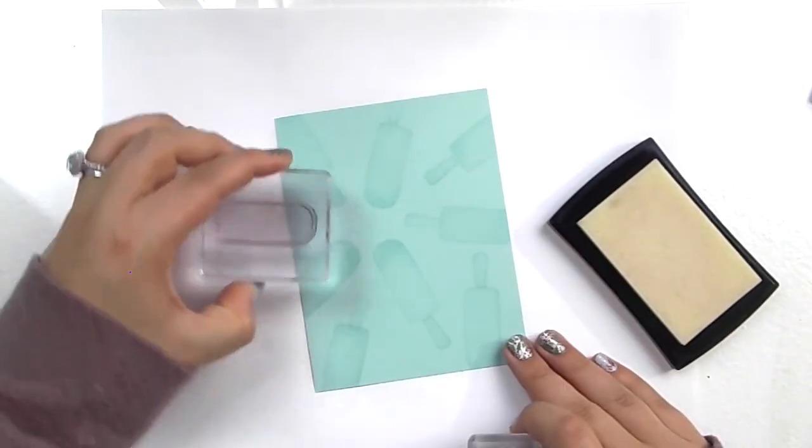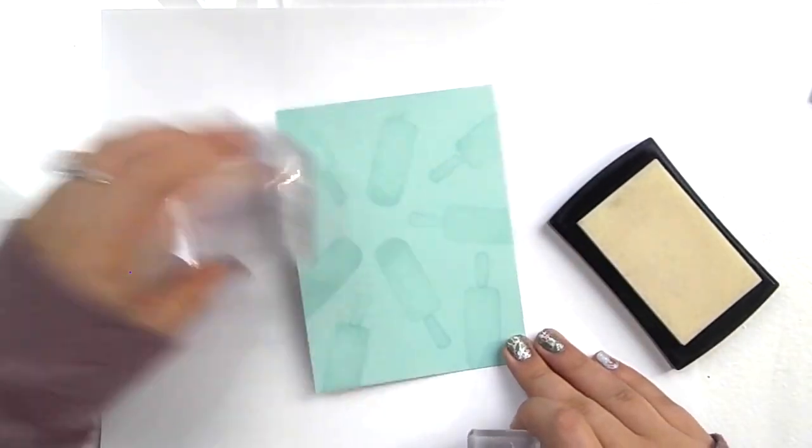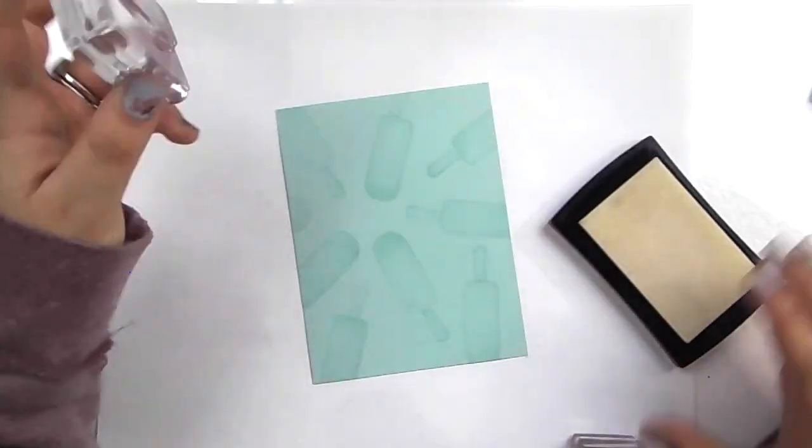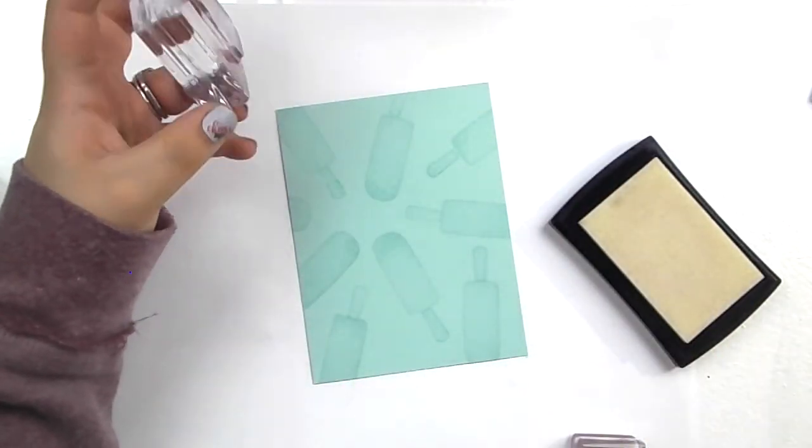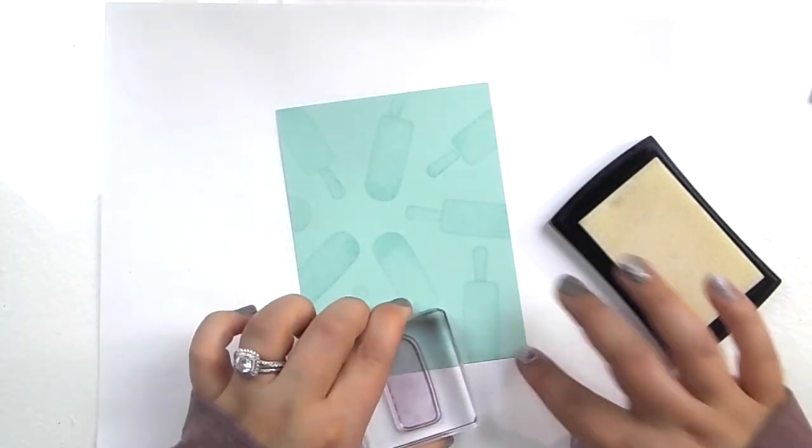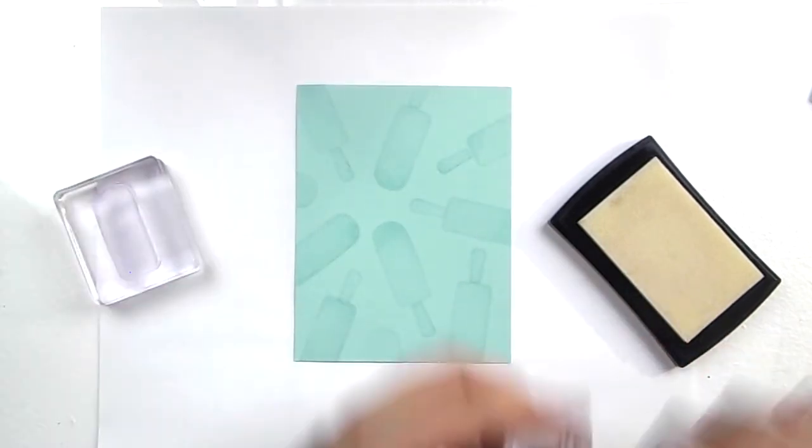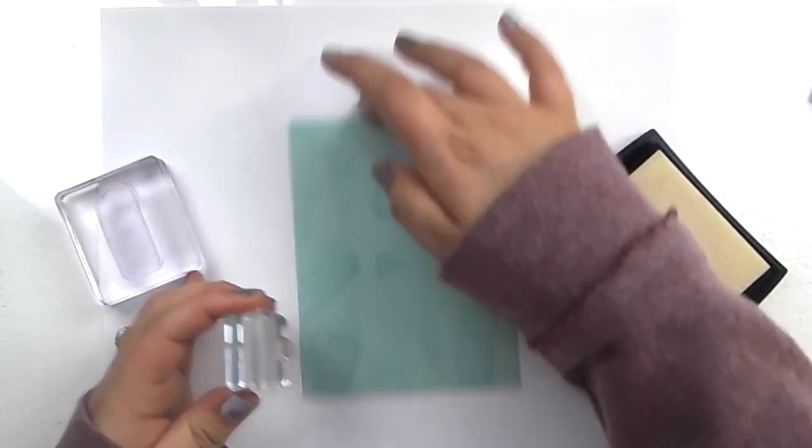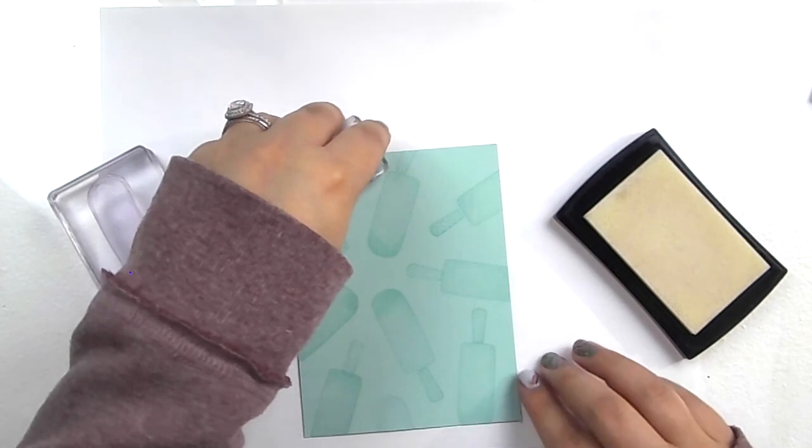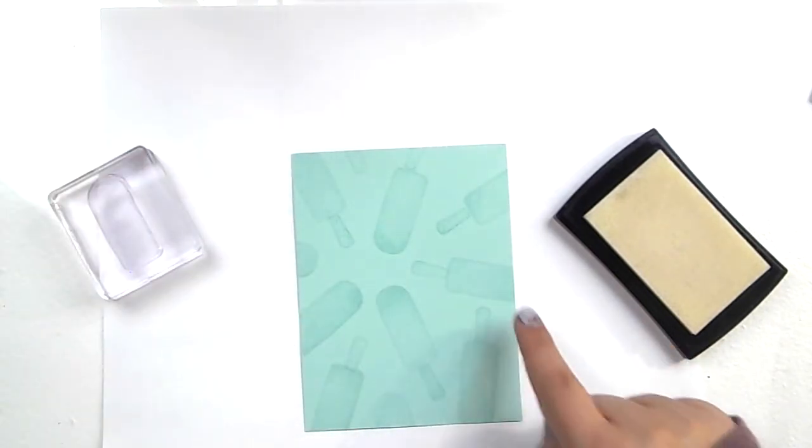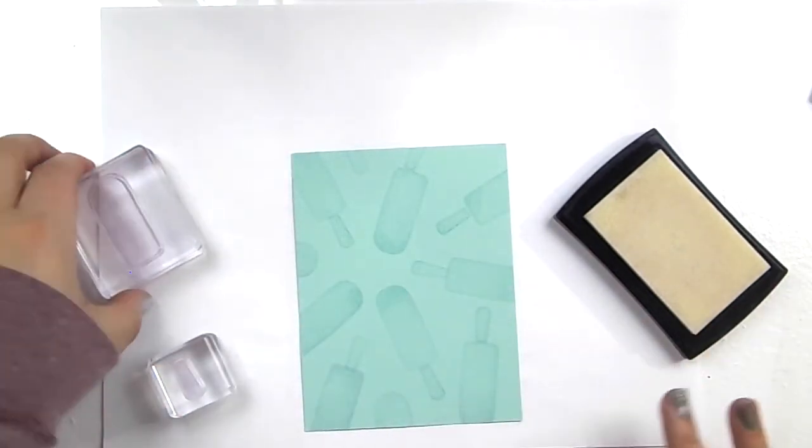You know, just do it however you want, whatever you think is going to look the best. I kind of use a couple different techniques as I'm doing this. It really just depends. I would suggest trying to stamp both, so like your full popsicle around the same time. So you have a good idea of your placement because it can get a little tricky trying to place all of your popsicles.